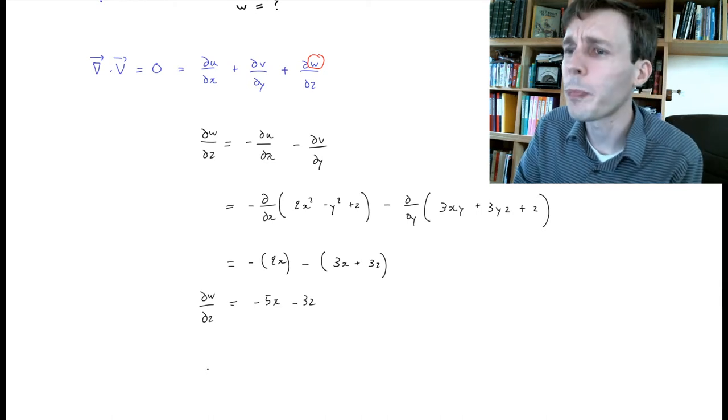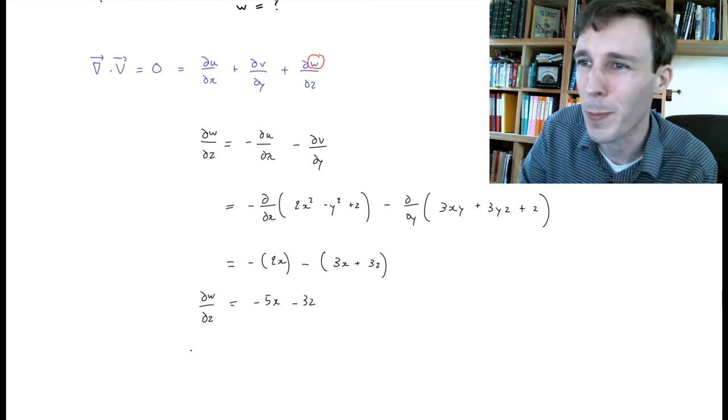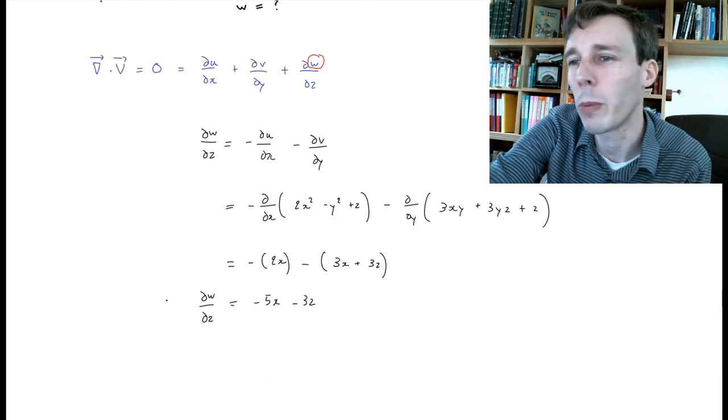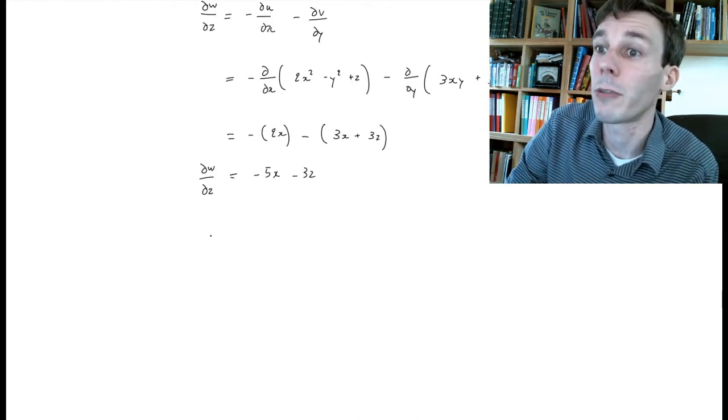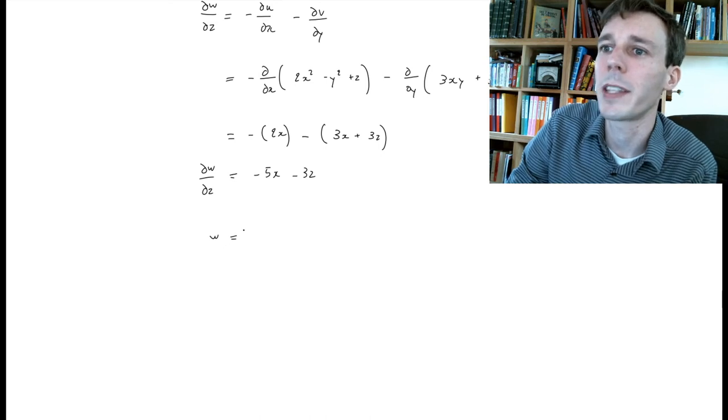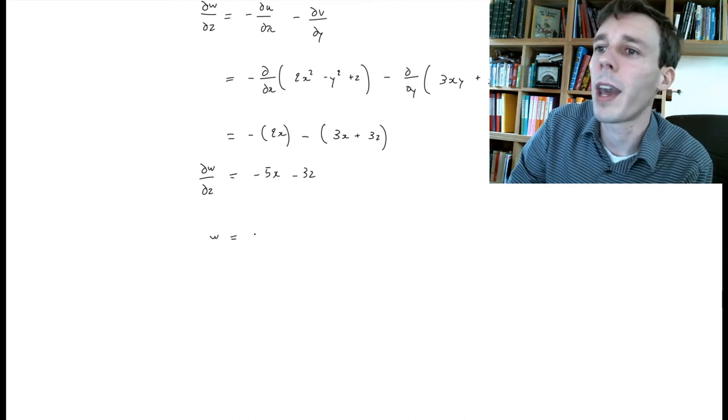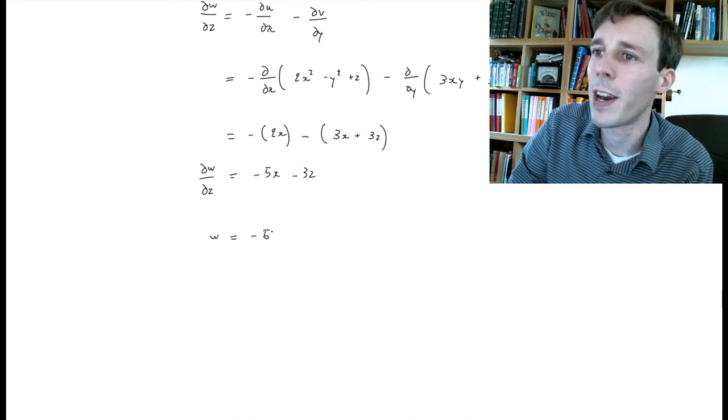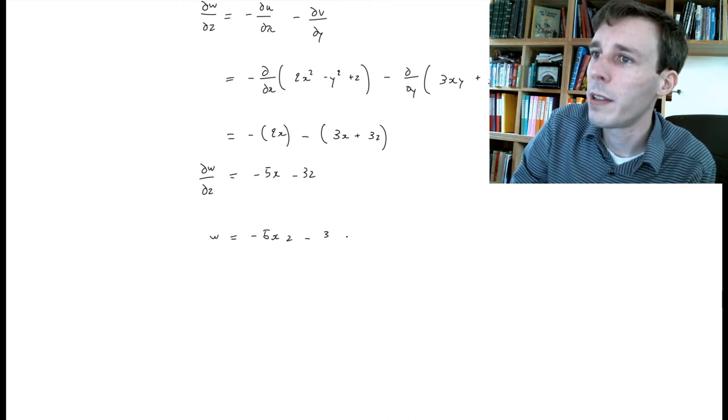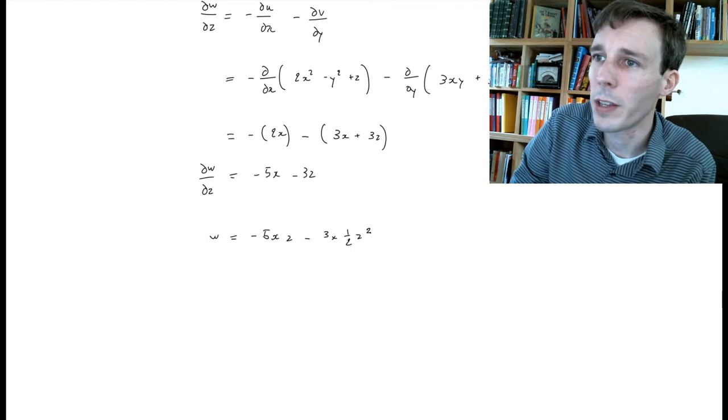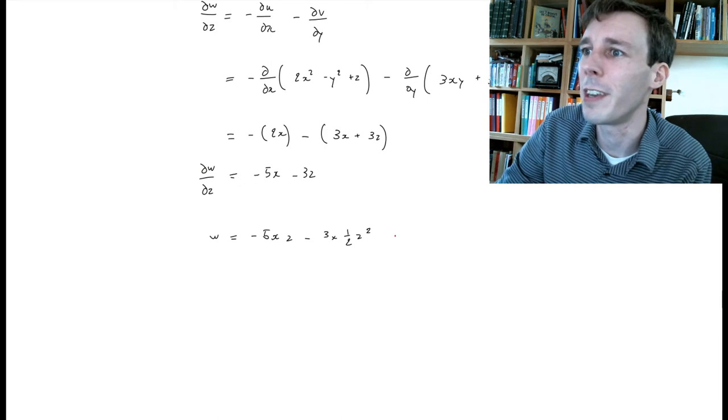This is kind of cool but we are not really looking for the partial derivative of w, we are looking for w. So what do we do when we have a derivative and we want the primitive? We have to integrate. So we write w. When I integrate this with respect to z, I'm going to have minus 5xz minus 3 times one half of z squared, plus - and this is very important - plus...